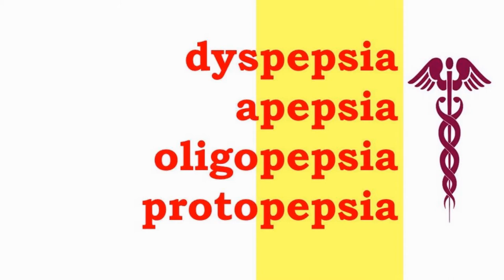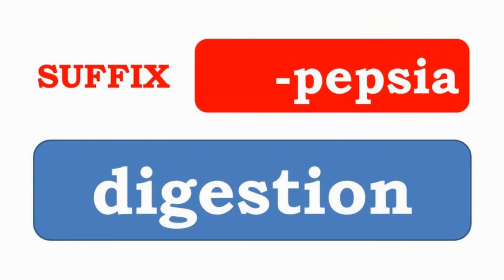Dyspepsia, apepsia, oligopepsia, and protopepsia have the suffix -pepsia, which indicates that they are related to digestion or the digestive tract.